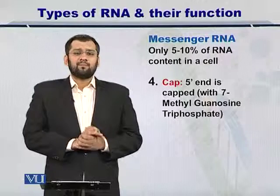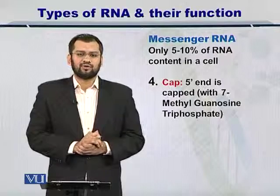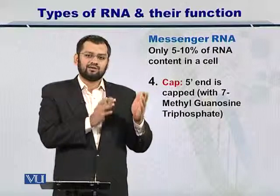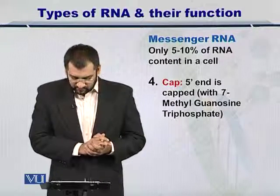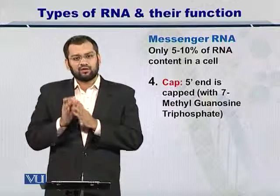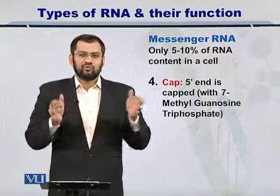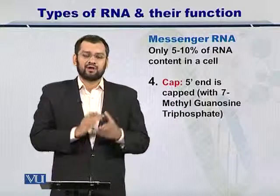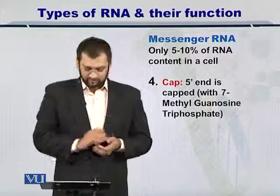There are some other important characteristics of mRNA that you should know. The first is that the five prime end of the RNA is capped — it is capped by a molecule called 7-methylguanosine triphosphate. The three prime end is also capped by a poly-A tail. Both of these caps have very specific roles that help transport the mRNA to the ribosomes.